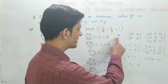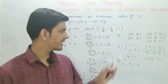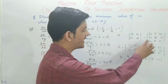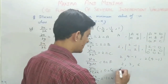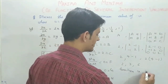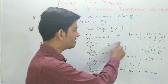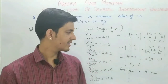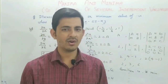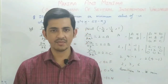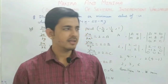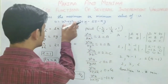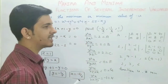Students, I have told you that if all three determinant values are positive, then the function is minimum. In this case, function u is minimum. The minimum condition is satisfied when all three determinant values are positive. If the signs change alternately, the function is maximum. If neither condition is satisfied, the function is neither maximum nor minimum. Substituting the stationary point x, y, z values into the function gives the minimum value.